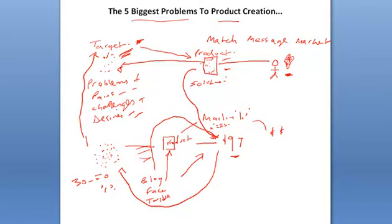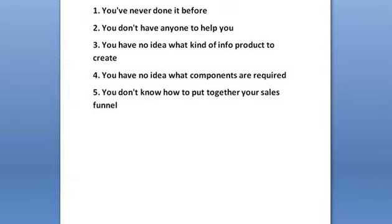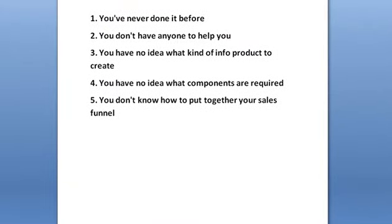There's five big problems to product creation, and these are five things that we aim to address. Number one is you've never done it before. That's a problem. That's what people say when we're teaching people, when Jim's going through profitable producers. People say, I've never done it before, how do I do it?